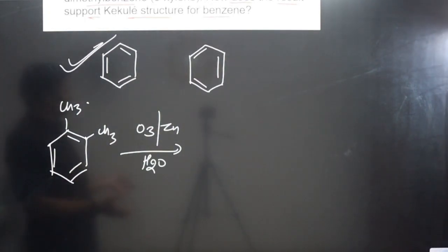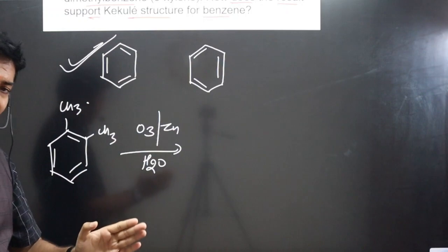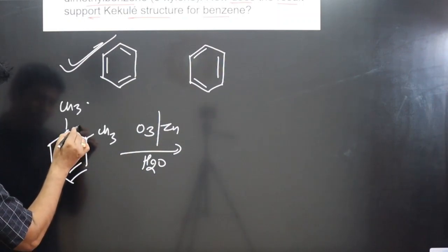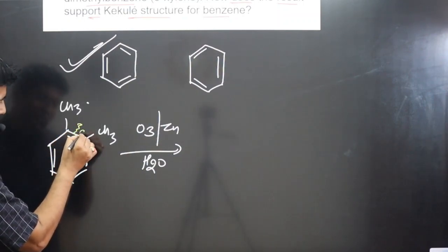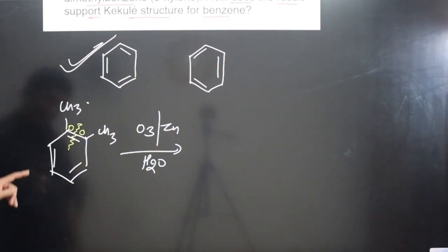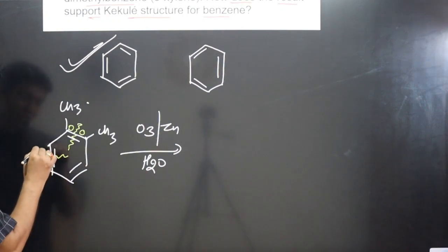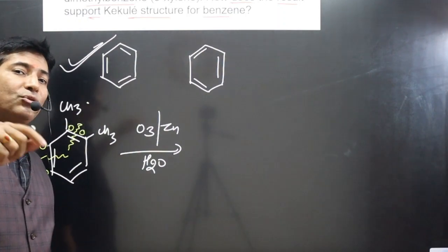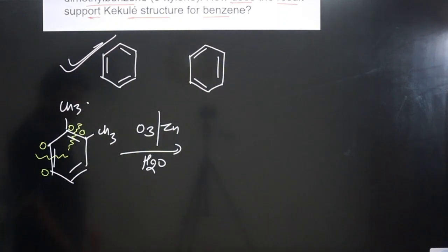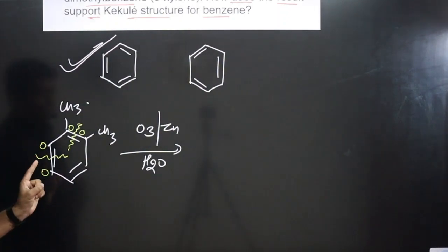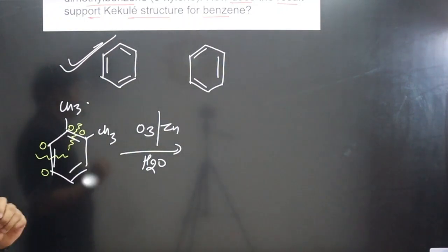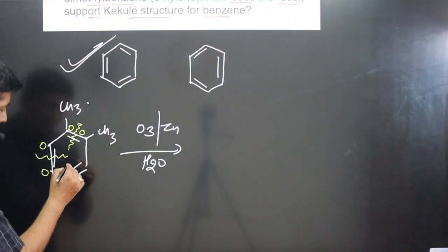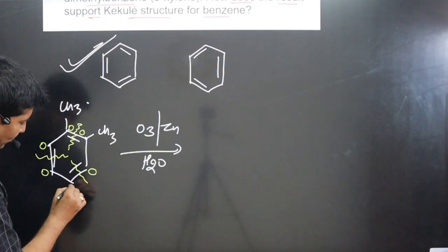In ozonolysis, wherever a double bond is present, we break both bonds of that double bond and attach oxygen on both sides. For example, at each double bond position, break both bonds and attach oxygen on each side. Since we are breaking two bonds of carbon, we need to form two new bonds to satisfy carbon's valency — that is why oxygen is attached. Addition of oxygen is an oxidation reaction.